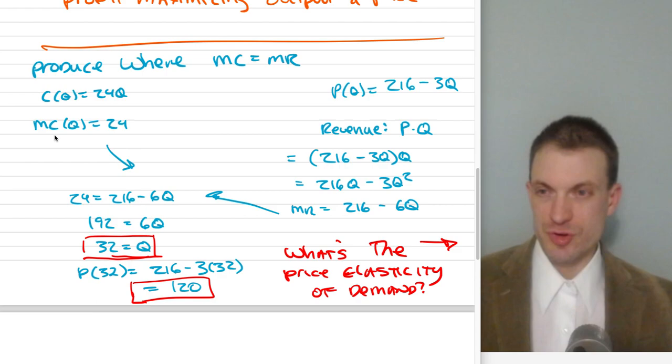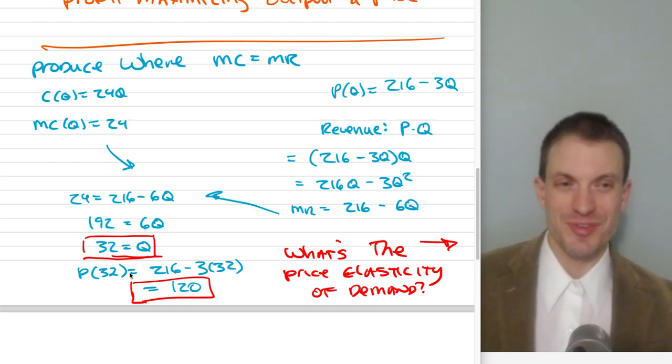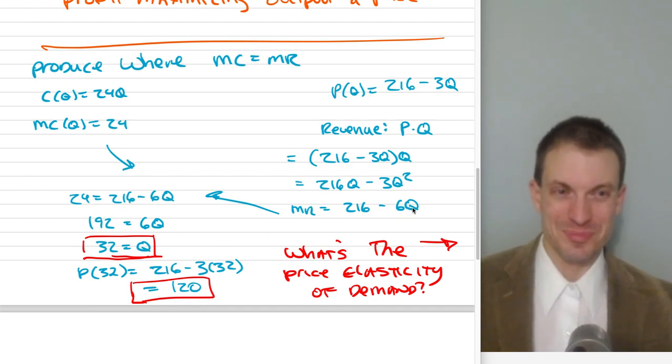Alright, now we can set marginal revenue equal to marginal cost. And we can solve for the optimal quantity, in this case, 32 units. Then we want to find the associated monopoly's price. Prices come from the demand curve, so you don't plug the quantity into marginal revenue, you plug the quantity into the demand curve. So 216 minus 3 times 32, or 120.